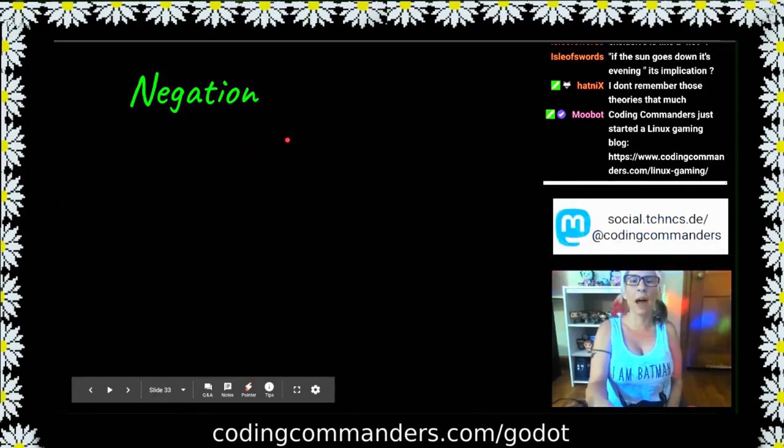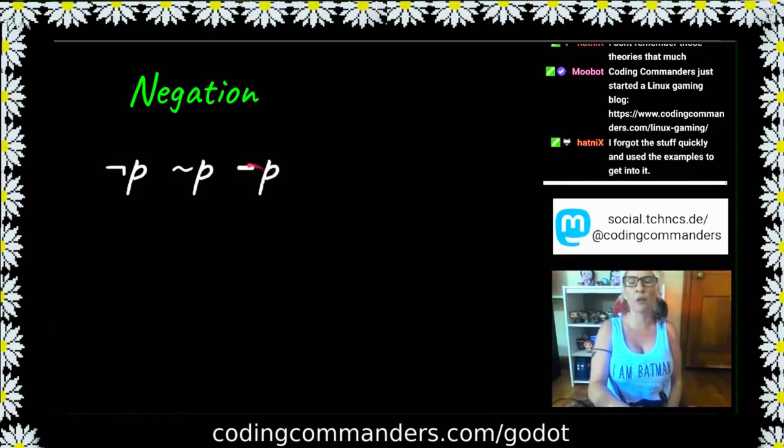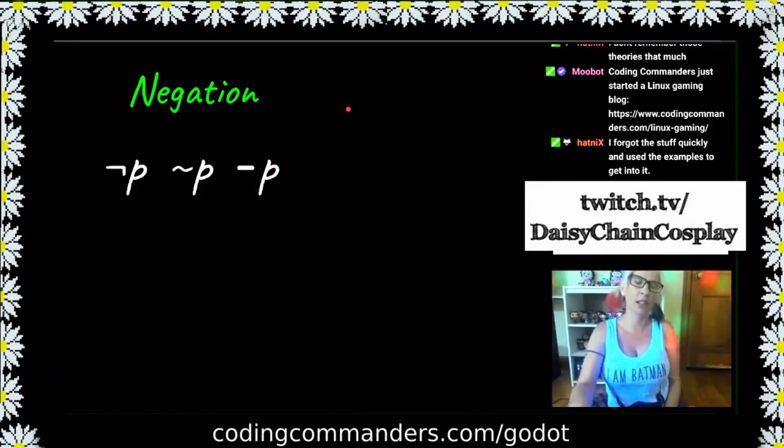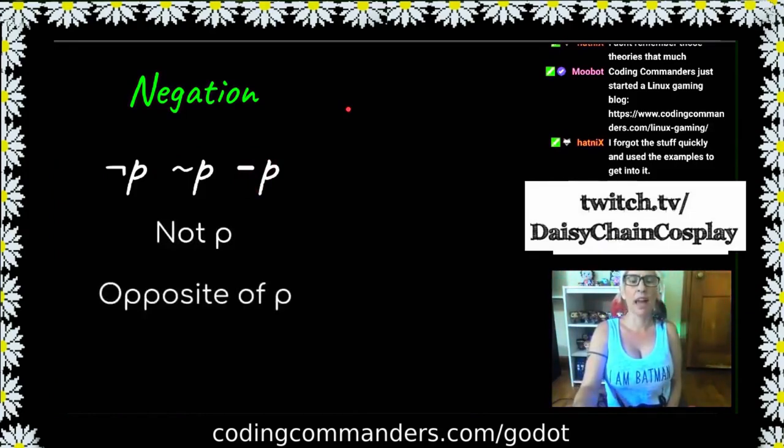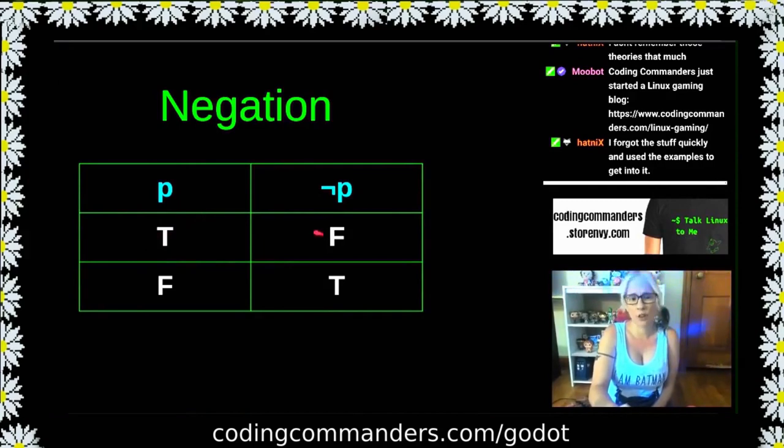Negation, that means not. In mathematics, you can see it written any of these ways. This is the one you're probably the most familiar with. That's the negative sign. Negative symbol, like negative three. This means not p, the opposite of p. You can say not p, the opposite of p, negative p. And the truth table for this. If p is true, not p is false. If p is false, not p is true.